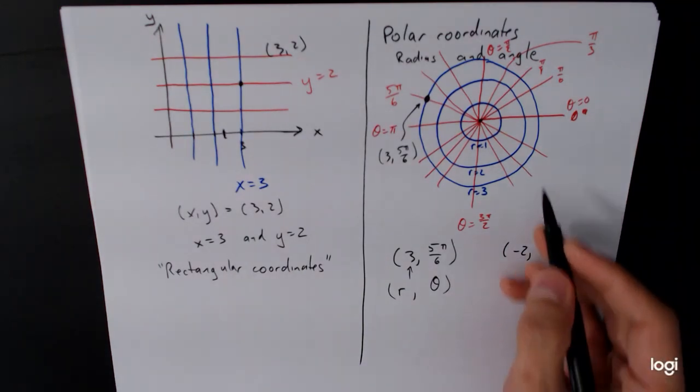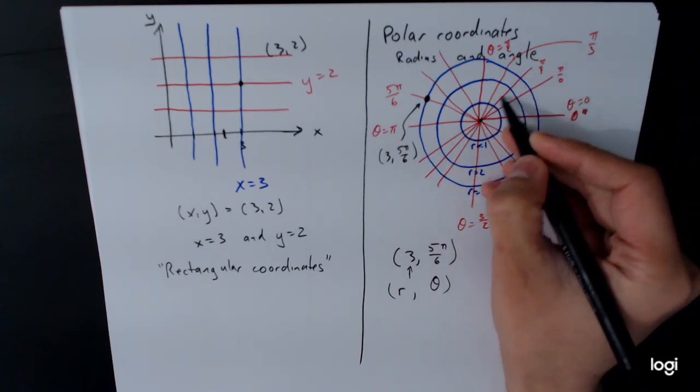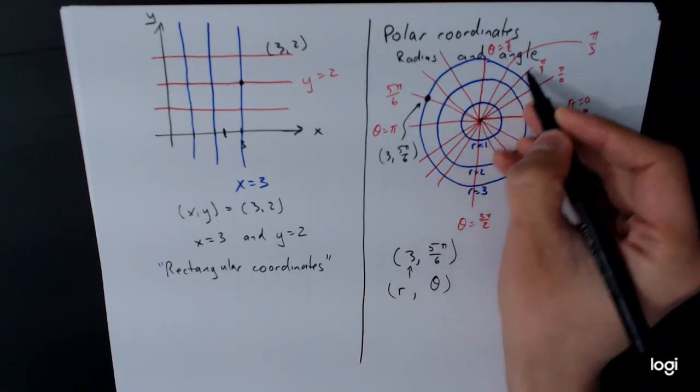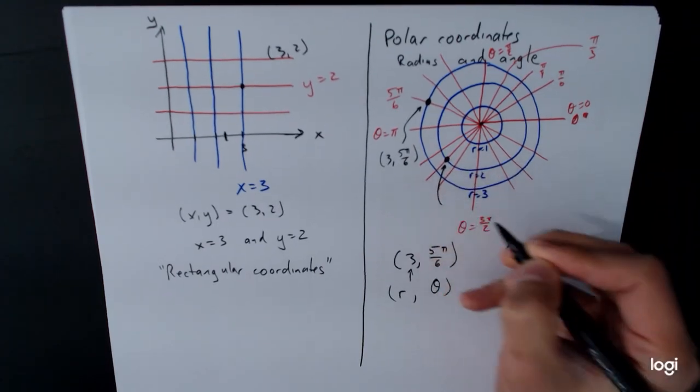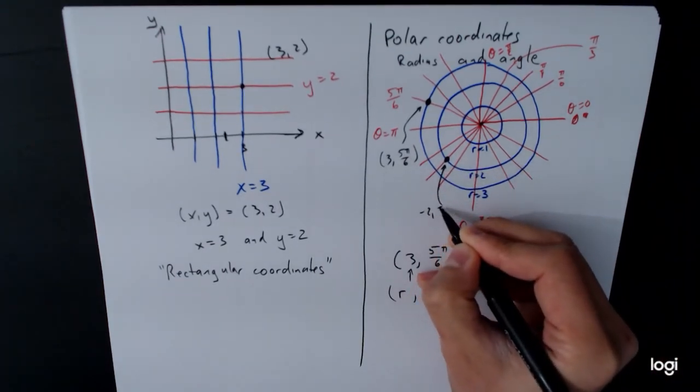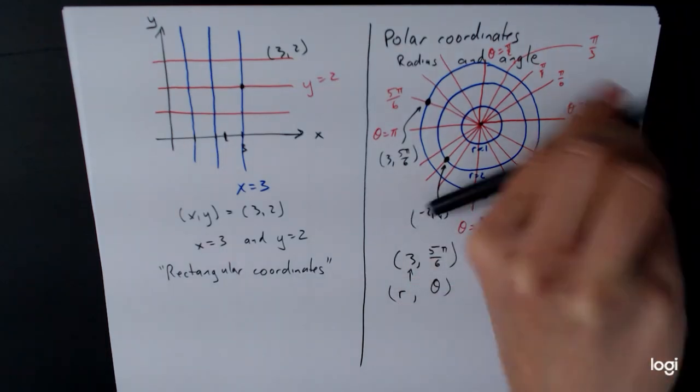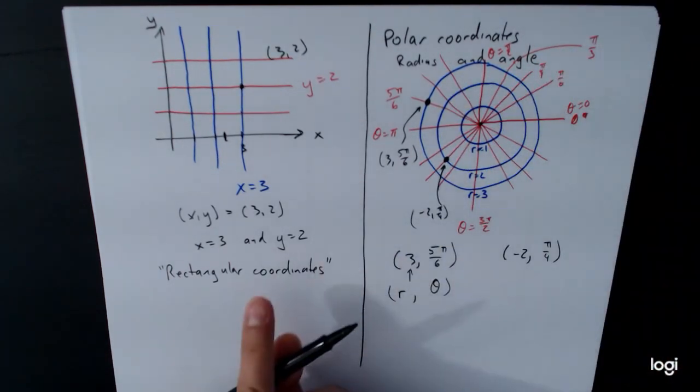So we go to the angle π/4. So that's this one right here. Instead of going forward towards π/4, we'll actually go backwards out this way. And so this point right here is our (-2, π/4). So the angle is π/4, but instead of going forward, we go backwards along that line.